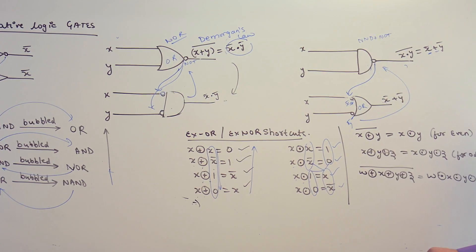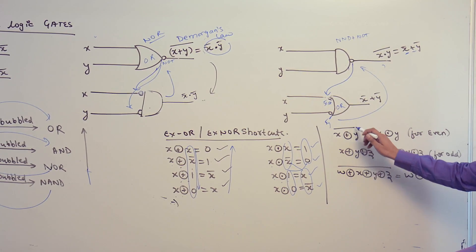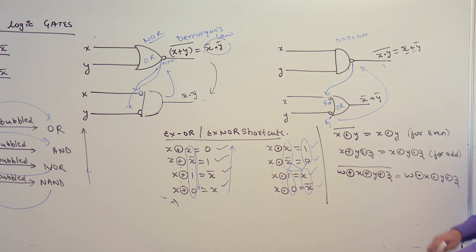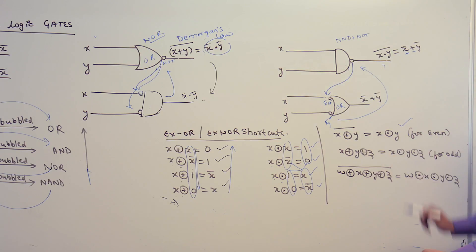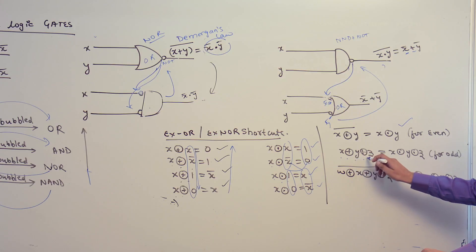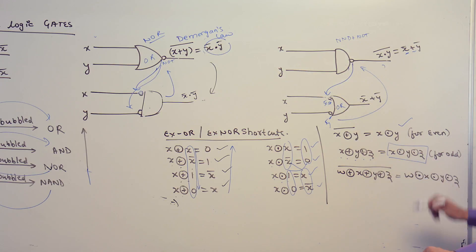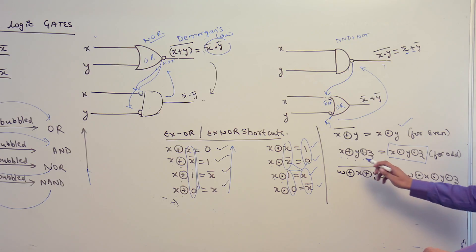If you do (X XOR Y) whole complement, then this is equal to X XNOR Y. Also, X XOR Y XOR Z can be written as X XOR Y XOR Z — XOR is associative. This rule holds for odd numbers of variables.